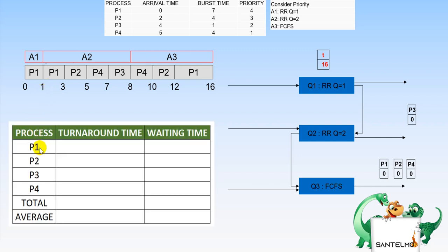Now for the table: turnaround time. P1 finishes at sixteen minus arrival zero equals sixteen. P2 finishes at twelve minus arrival two equals ten. P3 finishes at eight minus arrival four equals four. P4 finishes at ten minus arrival five equals five. Total is thirty-five, divided by four gives an average turnaround time of 8.75 milliseconds.